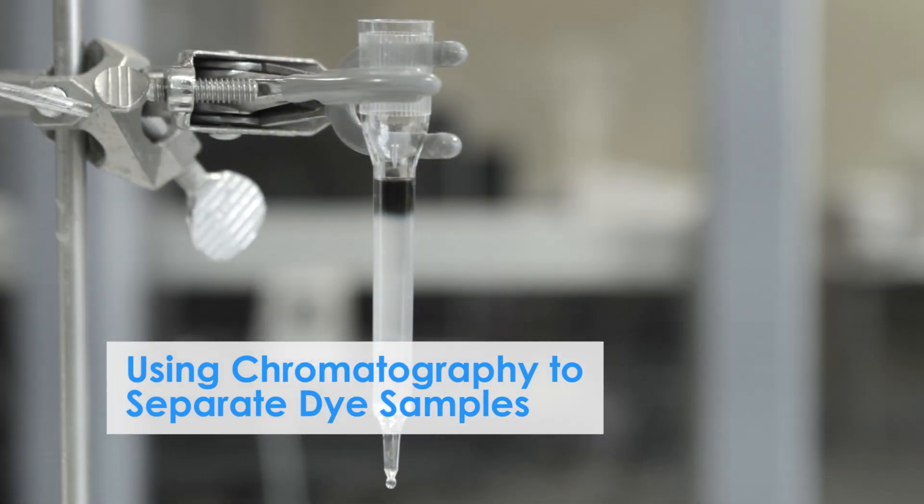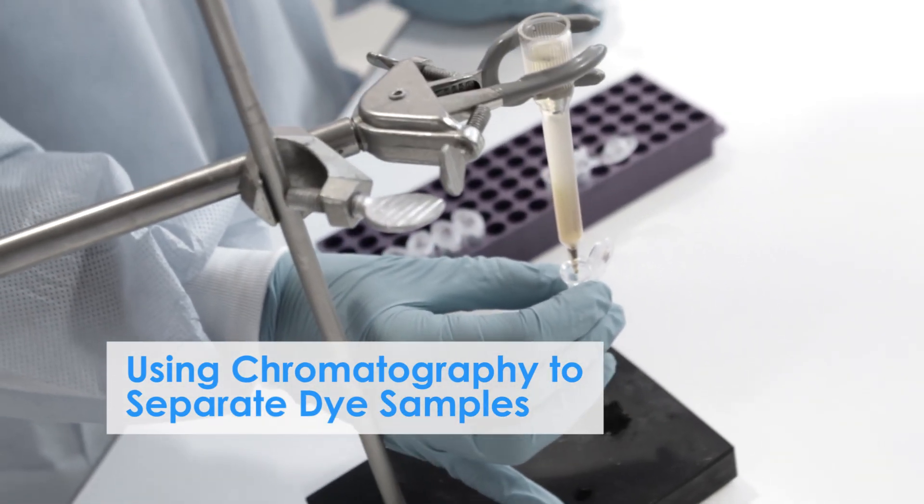Step 7: Proceed to the next module using chromatography to separate dye samples. If time is limited, the experiment can be temporarily stopped after the column has been packed.